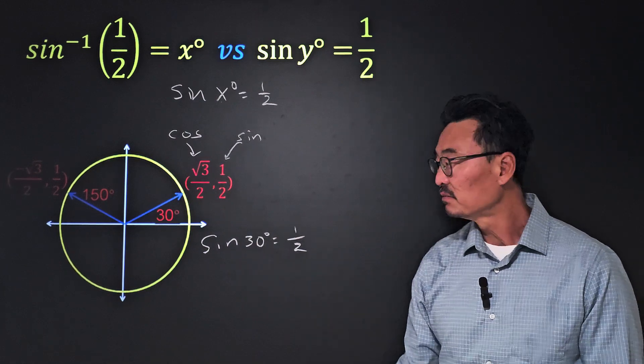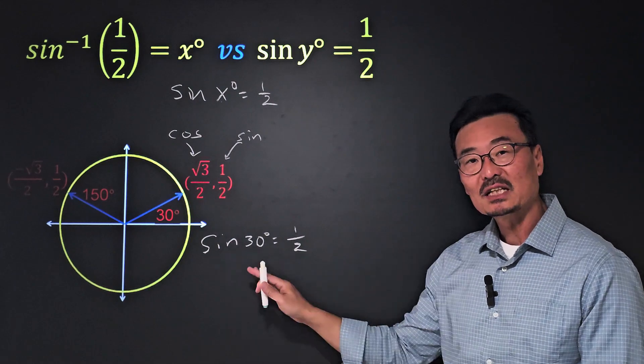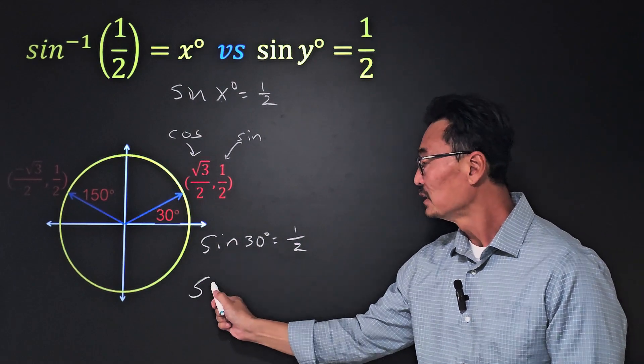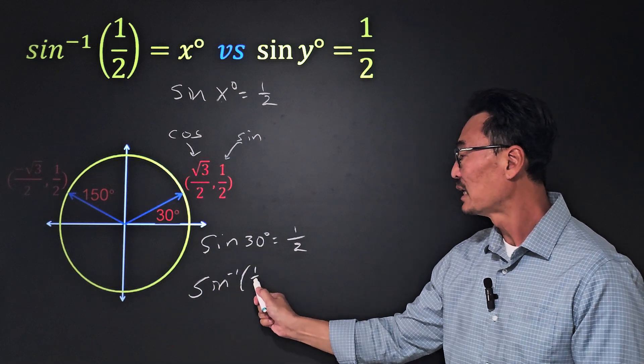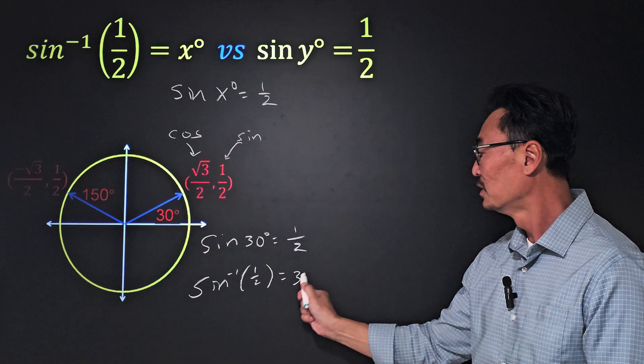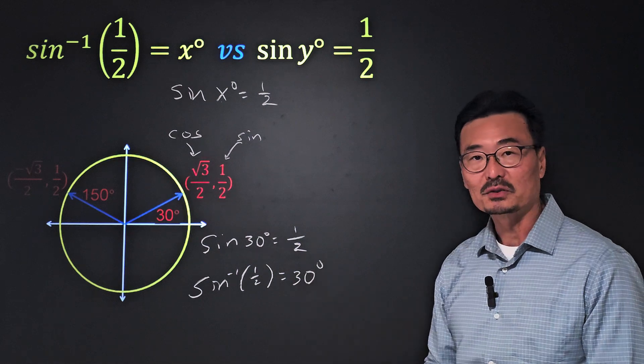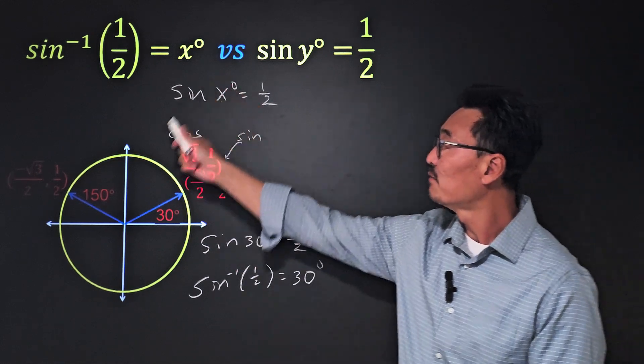And if we change that to an inverse function, inverse sine of one-half equals 30 degrees, meaning the x value here is 30 degrees.